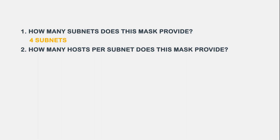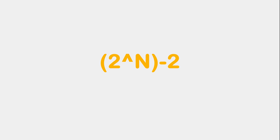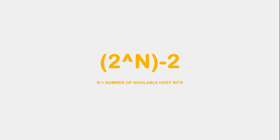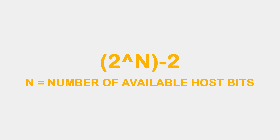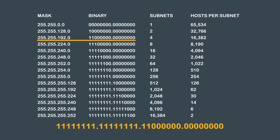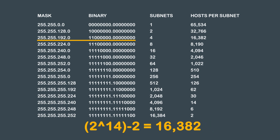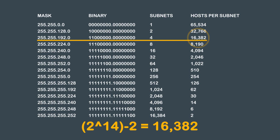Question 2 asks: How many hosts per subnet does this mask provide? To calculate the total number of hosts, we need to count how many host bits are available in our subnet mask, then apply the 2 to the power of n minus 2 formula, where n equals the number of available host bits. Our subnet mask is 255.255.192.0, which translated into binary equals all ones, all ones, one one followed by all zeros, and all zeros. As you can see, we have 14 available host bits. Using our 2 to the power of n minus 2 formula, we get 2 to the power of 14 minus 2, so our answer for question 2 is 16,382 hosts per subnet.